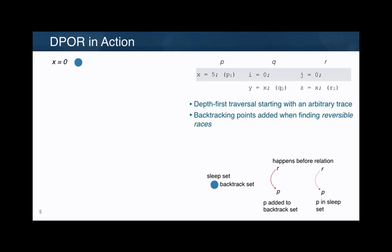Let me show very quickly how the original DPOR algorithm works. This is basically a depth-first traversal starting with an arbitrary trace. The crux of the algorithm is that it only backtracks whenever it finds evidence that there is a need to — because there is a race, that is, a dependency that can be reversed. In this example, it starts with P, then the first step of Q. These are not dependent, and now it finds a dependency: the second step of Q and the first step of P. It notices this can be reversed, so it adds a backtrack point.